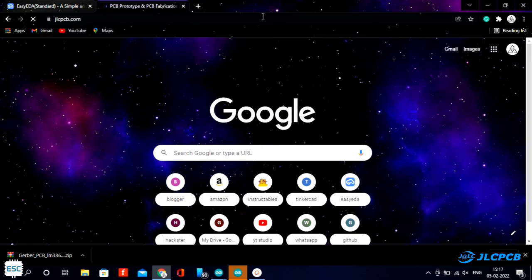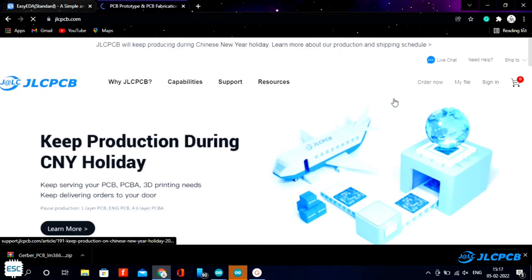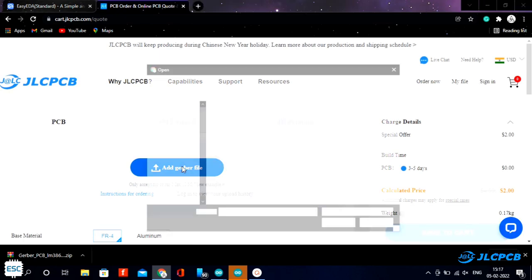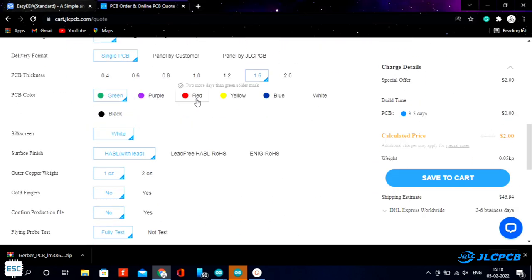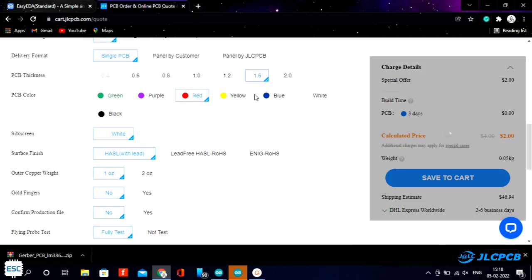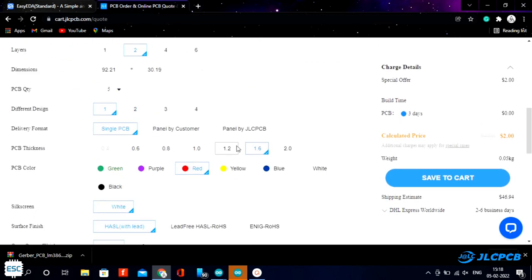Next I went to JLCPCB.com. JLCPCB gives 5 PCBs for just $2. To order, click order now and then add your gerber file. After uploading, select the board color, then select the shipping method and place the order.